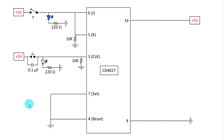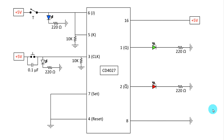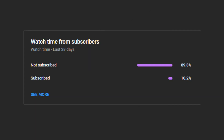Here we also connect a pull-down resistor of 10 kilo-ohms, and we connect an LED for the clock. Pin 7 is Set and pin 4 is Reset — we connect both of them to the negative rail. Pin 1 is Q and pin 2 is Q-bar. With Q we connect a green LED and with Q-bar a red LED, then connect a 220 ohm resistor to the negative rail. This is our complete circuit. Now we will build it on the breadboard and verify the truth table.